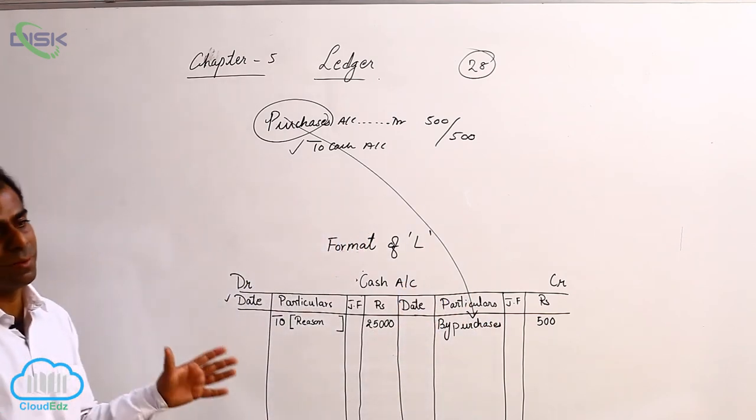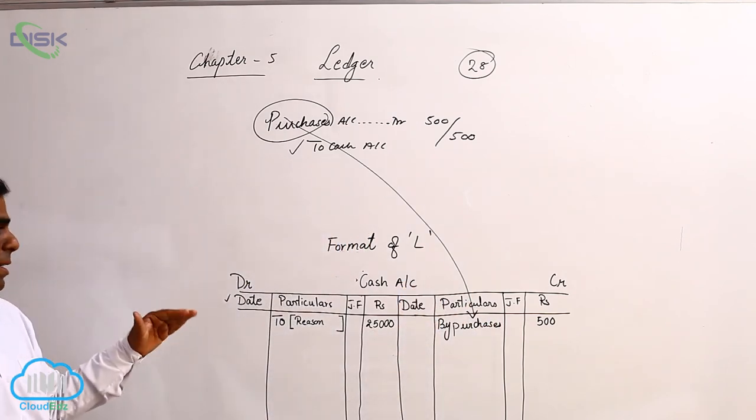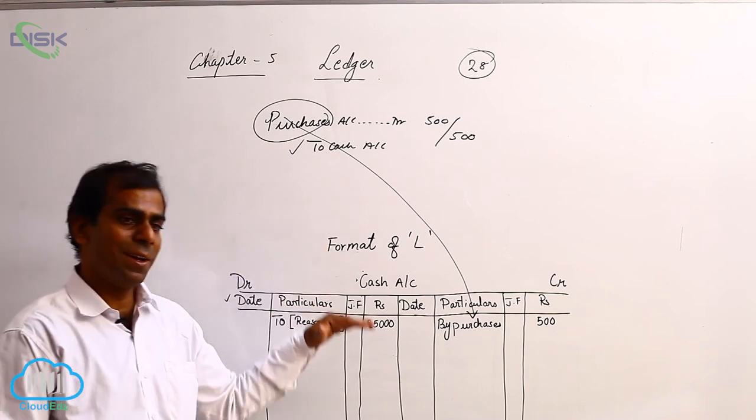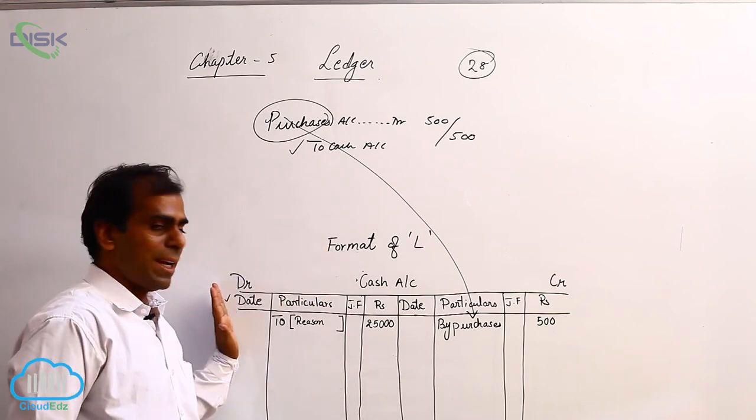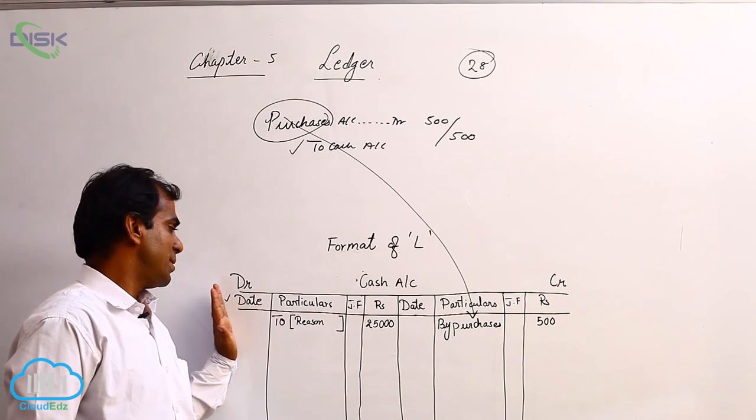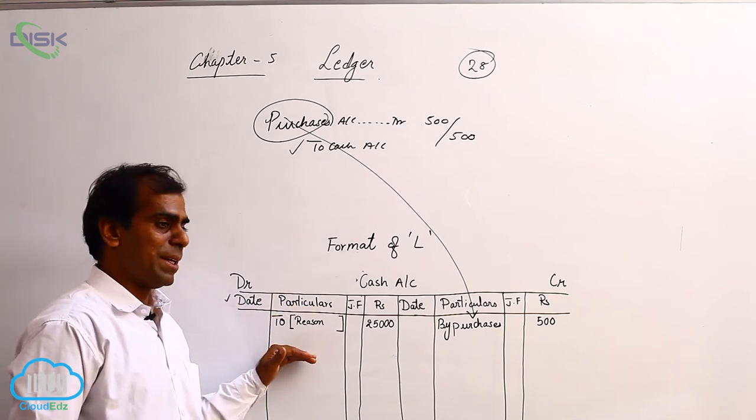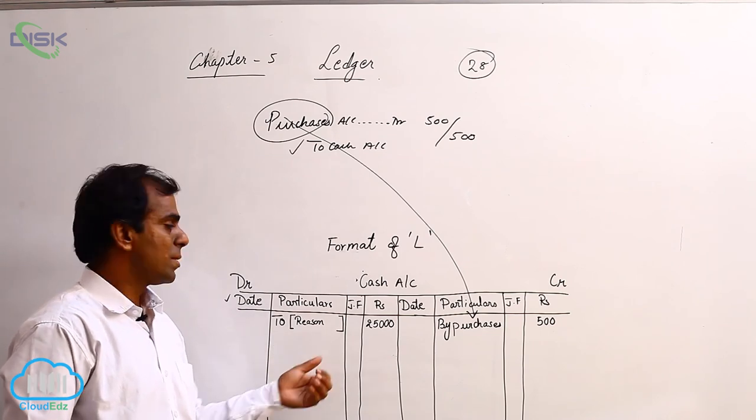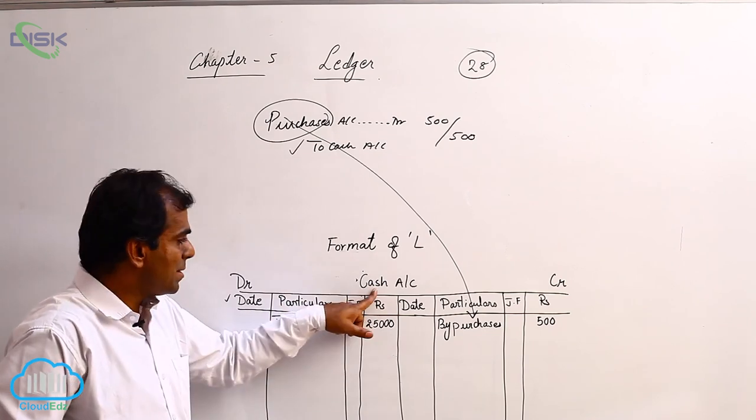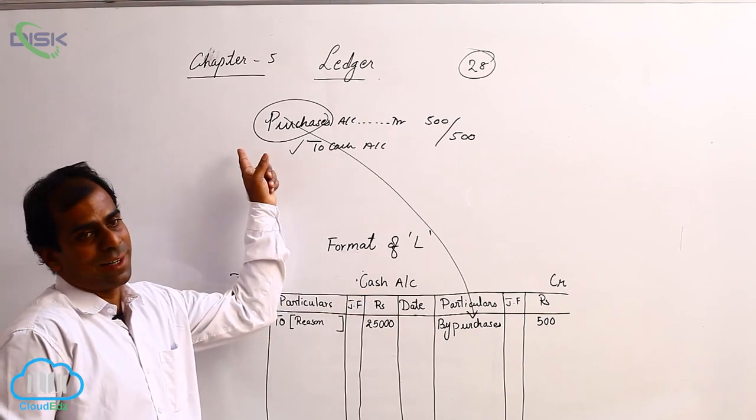That is how we would be using our columns in the format of your ledger. In date, we enter the date on which the transaction has taken place and particulars column, the reason for debiting or crediting the account and ultimately the amount what was mentioned against the ledger in the journal entry.